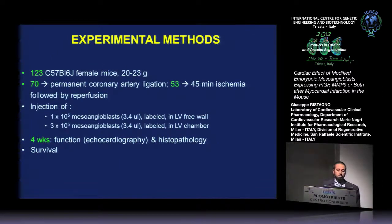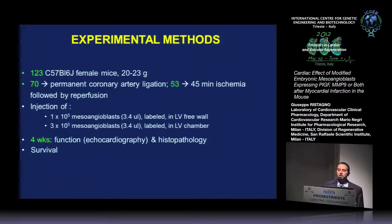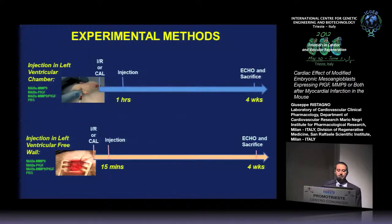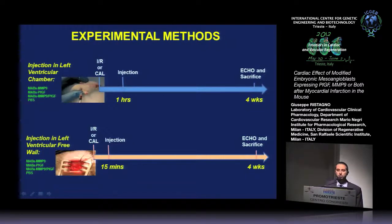We used more than 100 female mice: 70 underwent permanent coronary artery ligation and 53 underwent 45 minutes of ischemia followed by reperfusion. They were then divided to receive an injection of 100,000 mesangioblasts into the left ventricle free wall or 300,000 into the left ventricle chamber. Four weeks later, we measured functional recovery by echocardiography, and in the most promising groups we proceeded to histopathological examination. The intracavitary injection was performed one hour after the ischemia reperfusion or coronary artery ligation, up to four hours later. The free wall injection was performed 15 minutes after the ischemic injury to avoid reopening the chest.